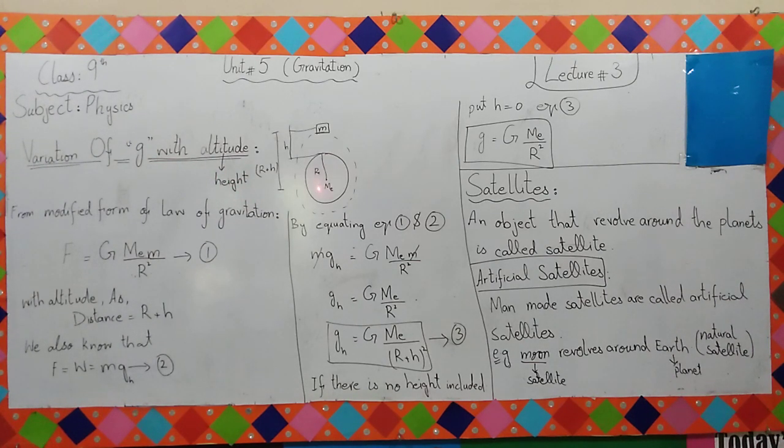Now in front of you, you have a diagram in which you see Earth. The radius is M-E. From the center of this Earth, the distance is R. What is the radius of Earth?